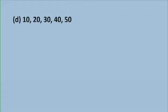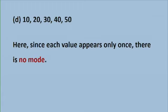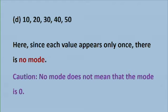Now let us look at part D: 10, 20, 30, 40, 50. Here each value is occurring only one time. So since each value appears only once, there is no mode for this set of data. But be careful, no mode does not mean that the mode is zero. We just write no mode.